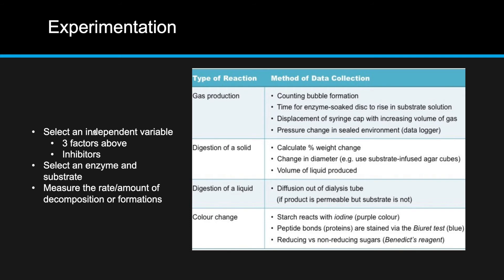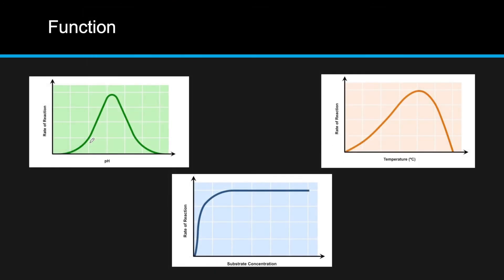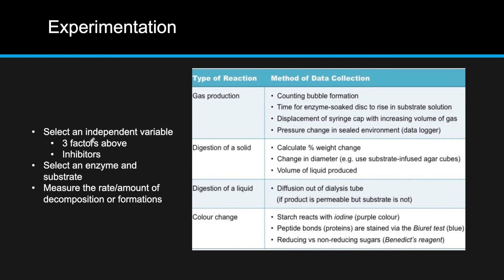IB expects you to know how to design experiments. You won't specifically be tested on this in any detailed way, but it's an application skill you'll need. For any experimentation, we need to select an independent variable — the three factors we discussed: pH, temperature, and substrate concentration. For HL topics we can also talk about inhibitors. Then you select an enzyme and a substrate — these have to be known. For example, lactase will take lactose and break it down into glucose and galactose.